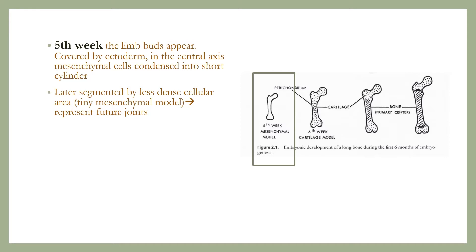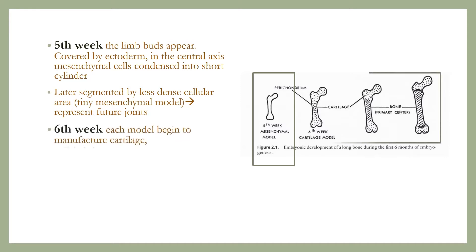By the sixth embryonic week, the undifferentiated mesenchymal cells of each model begin to differentiate by manufacturing cartilage matrix, thereby forming a cartilaginous model of the future bone.